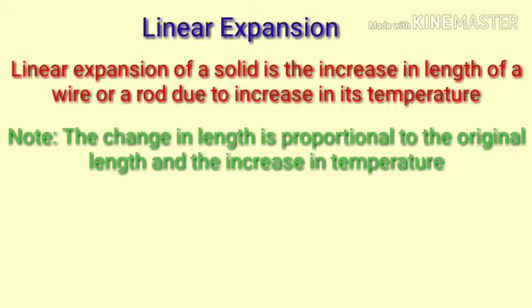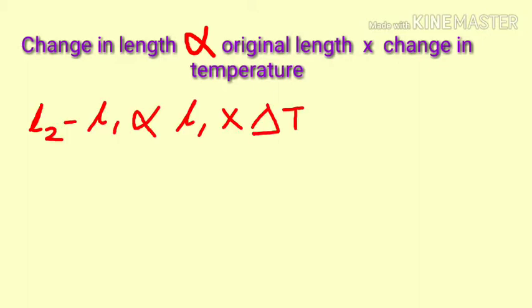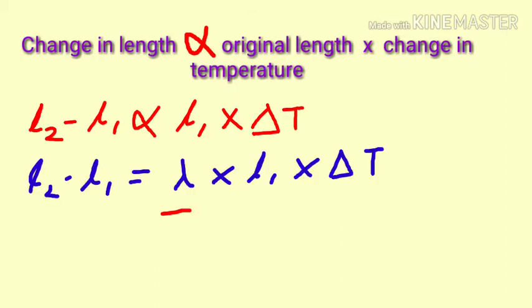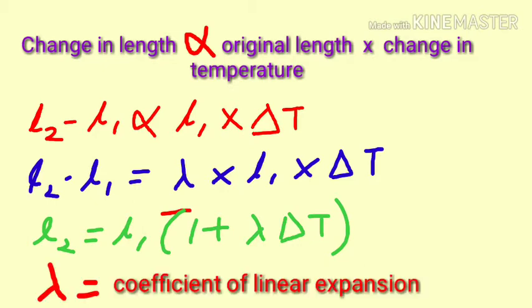The change in temperature is denoted by delta T which is equal to T2 minus T1, T2 being the final temperature and T1 is the initial temperature. We know that the change in length is directly proportional to the original length multiplied by the change in temperature. So the equation form is L2 minus L1 is proportional to L1 into delta T. To convert this proportional sign into an equation, you have to add a constant and that constant is lambda. So you have L2 minus L1 is equal to lambda into L1 into delta T. Simplify this equation by getting L1 on the right hand side, L1 gets common. So you have L2 is equal to L1 bracket 1 plus lambda delta T. Lambda is also called the coefficient of linear expansion.